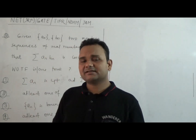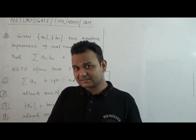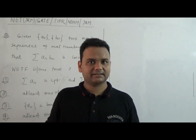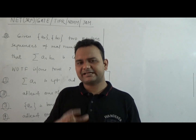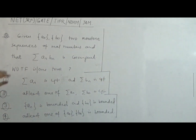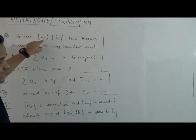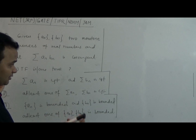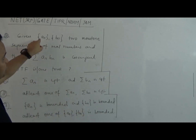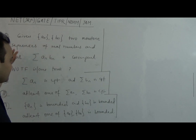Let's try to understand the question first — what the question exactly says and how to answer it. The question is very simple, it's related to monotone sequences. So the question is: look at two monotone sequences A_n and B_n, with the condition that the series of A_n * B_n is convergent. Then they ask which of the following are true.